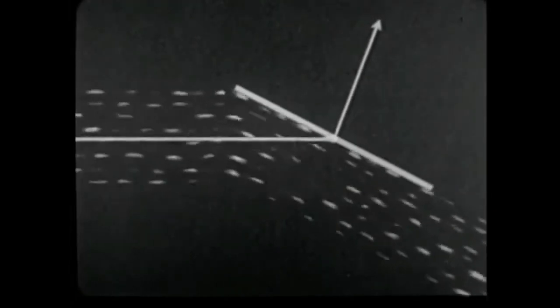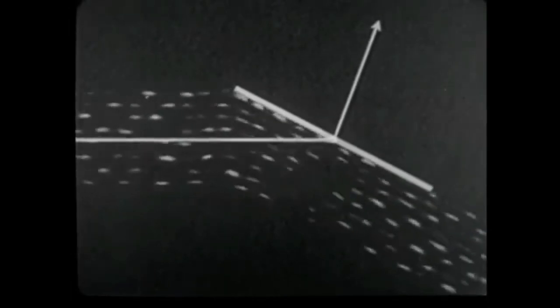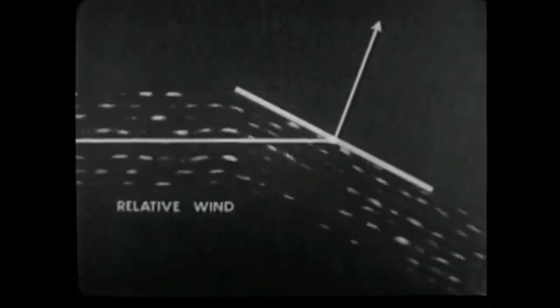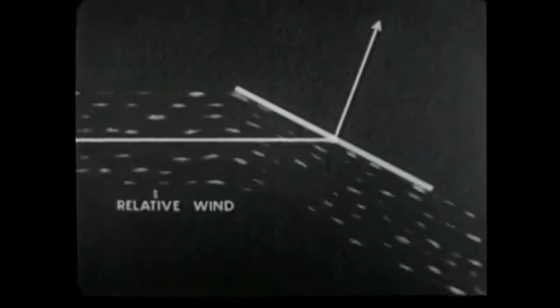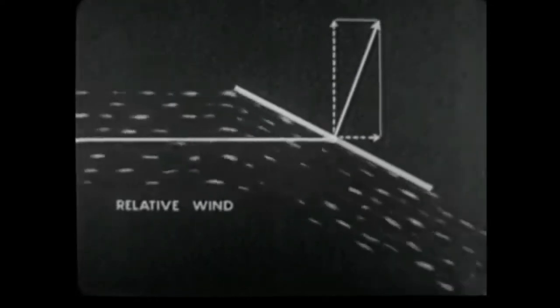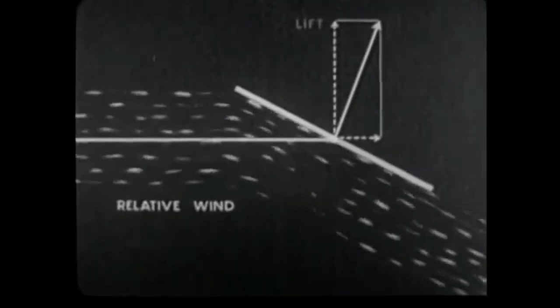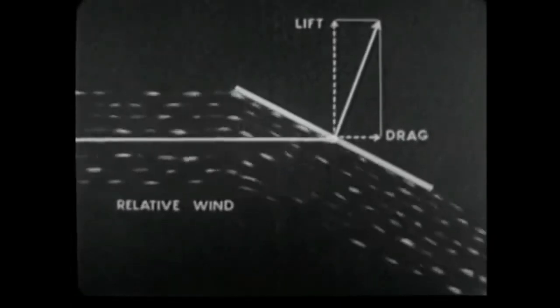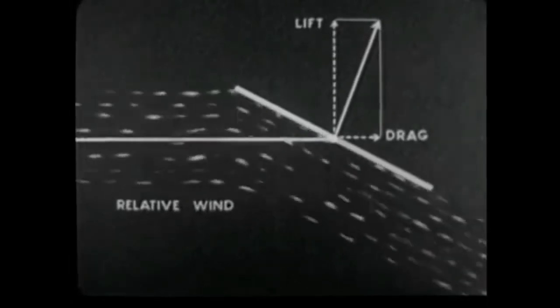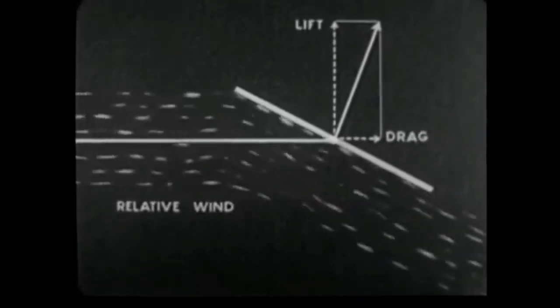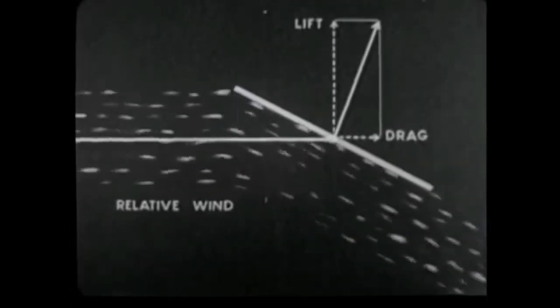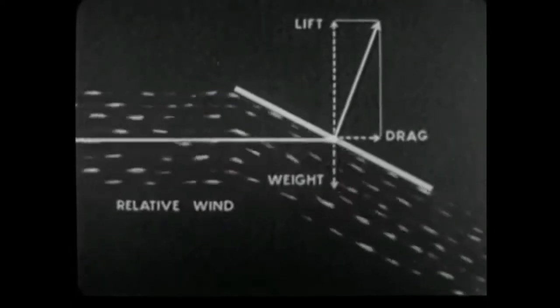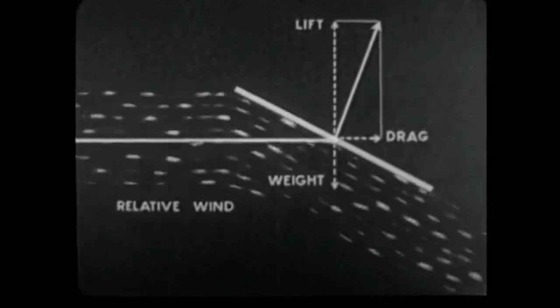An air stream flowing past a flat plate exerts upon it a force whose direction depends upon the angle between the plane of the plate and the direction of airflow. This force may be analyzed into component forces which are called lift and drag. If the plate is held in a horizontal air stream, lift is opposed by the weight of the plate and drag is opposed by the tension on the cord.